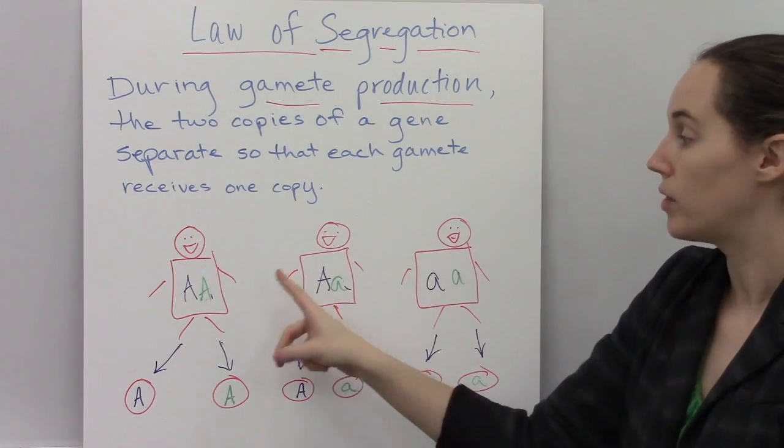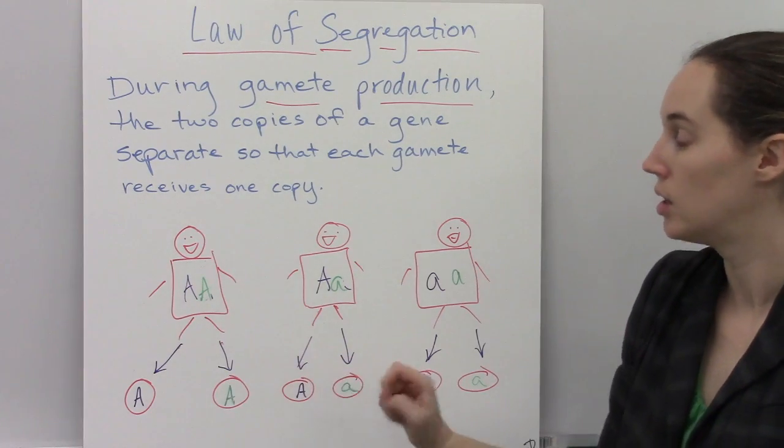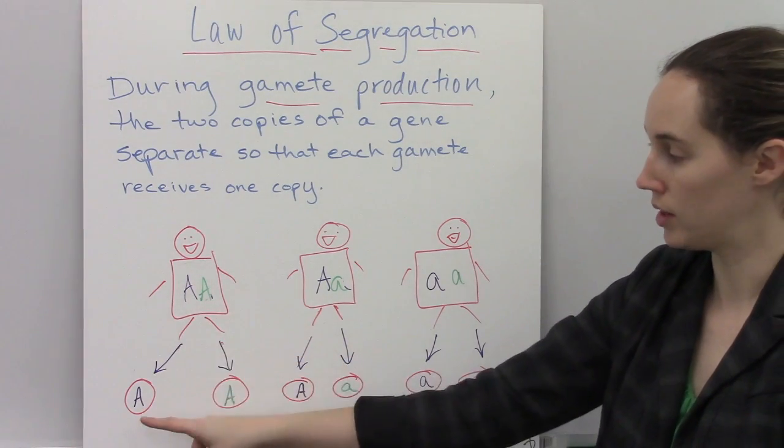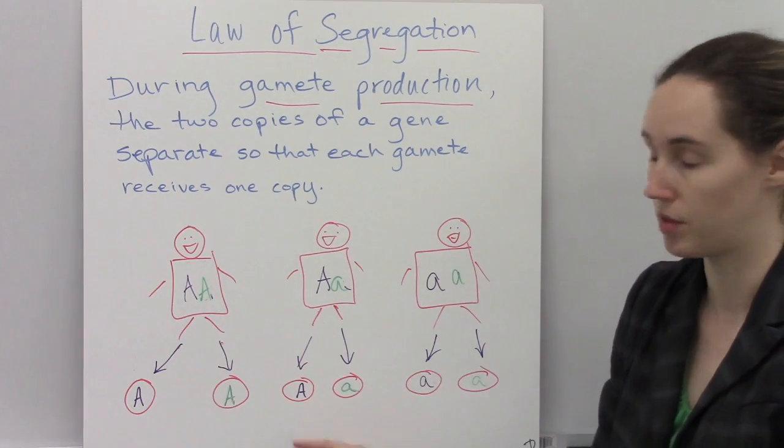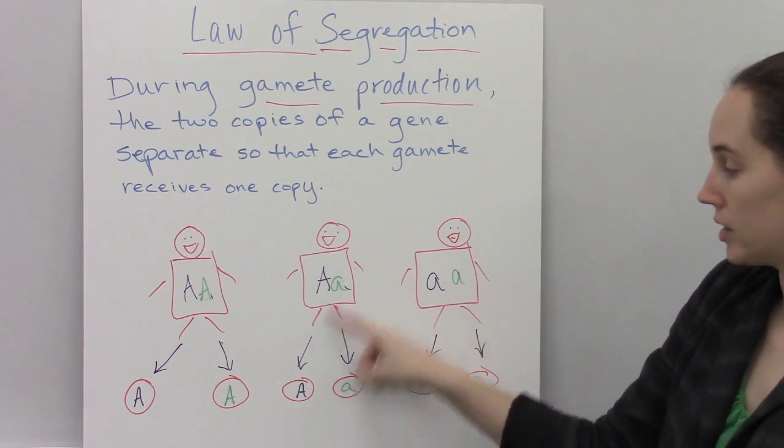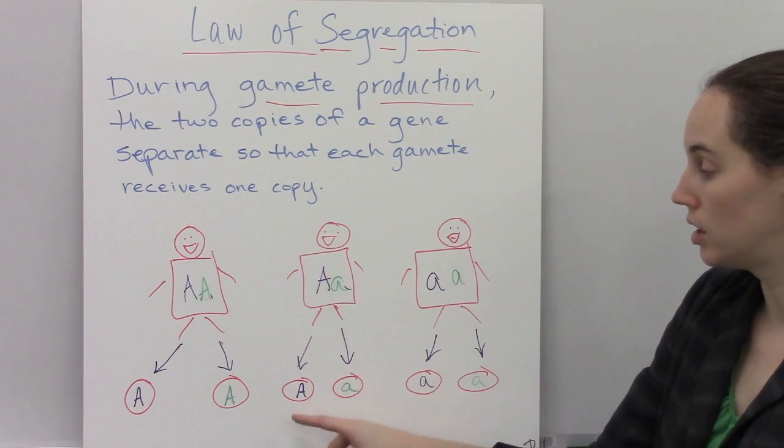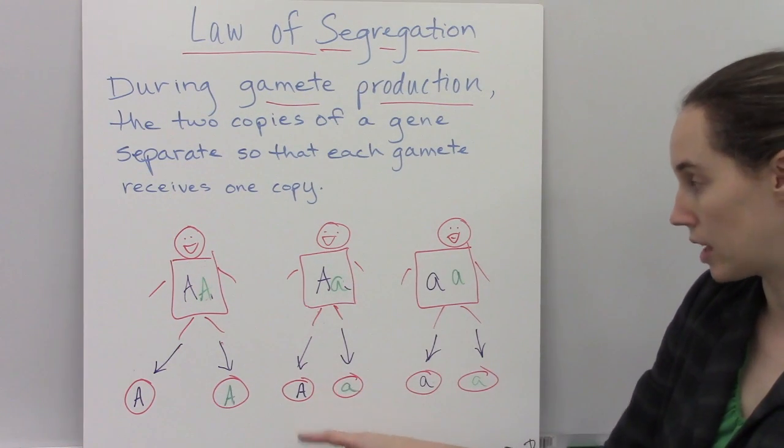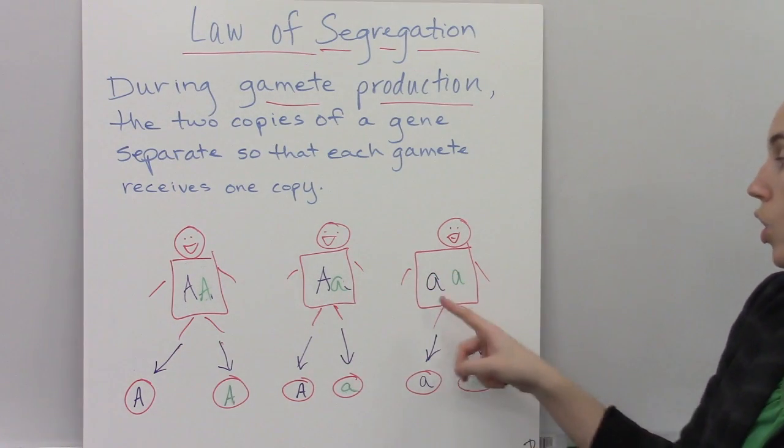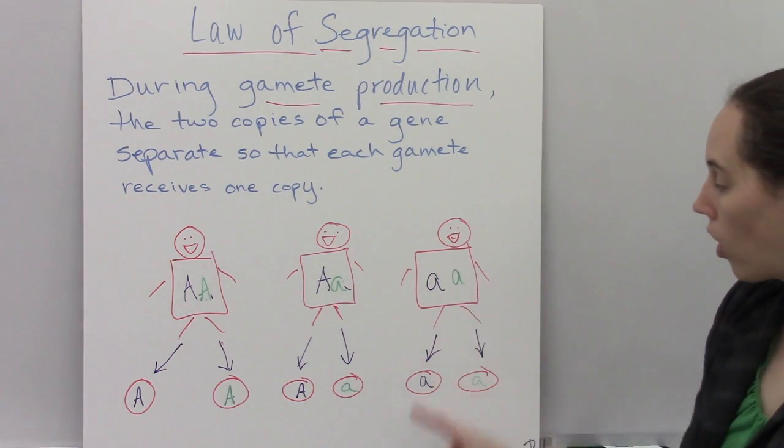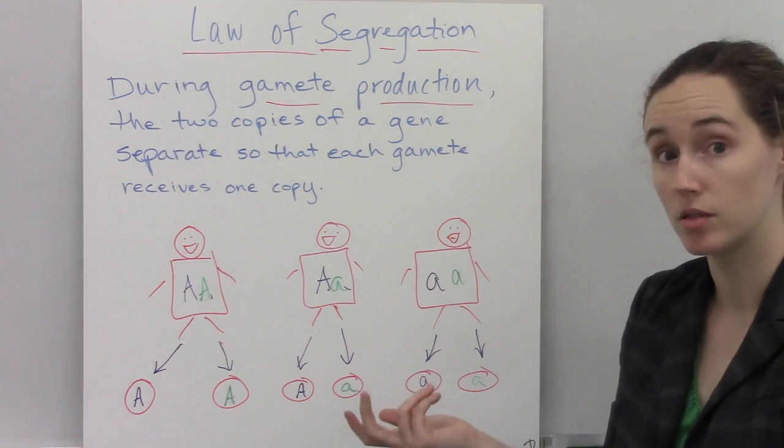So if you have a person who is homozygous dominant for a trait, one of each of those will go into each of their gametes. Same if you're a heterozygote, you're going to have your dominant allele go into one set of gametes, and the recessive allele go into the other. If you are homozygous recessive, all of your eggs or sperm will have the recessive allele.